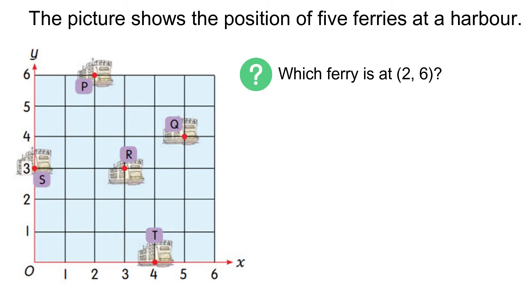The coordinate given is 2, 6. That means x is 2 and y is 6. Look at x-axis. Look for 2. From 2, move up until y is 6. So, ferry P is at 2, 6.